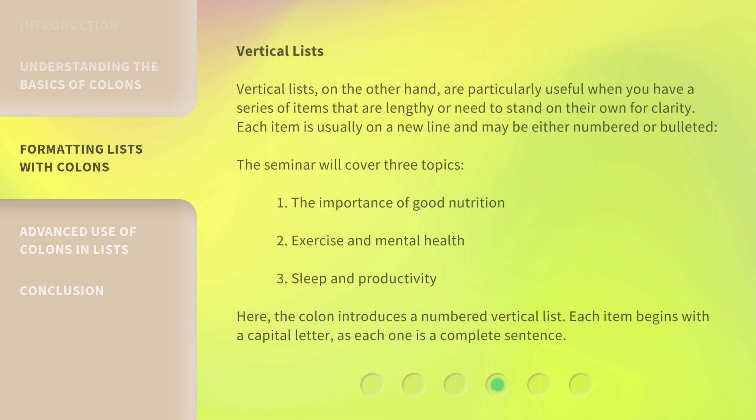Vertical lists, on the other hand, are particularly useful when you have a series of items that are lengthy or need to stand on their own for clarity. Each item is usually on a new line and may be either numbered or bulleted. The seminar will cover three topics: 1. The importance of good nutrition. 2. Exercise and mental health.